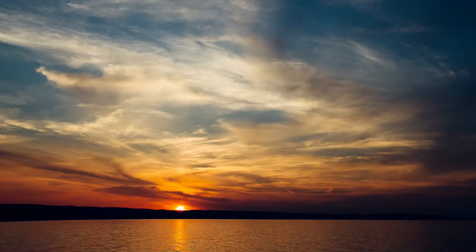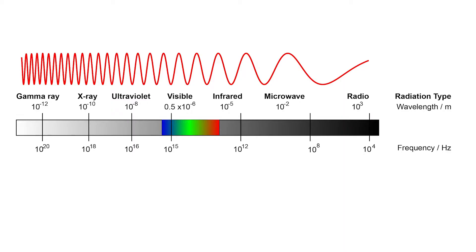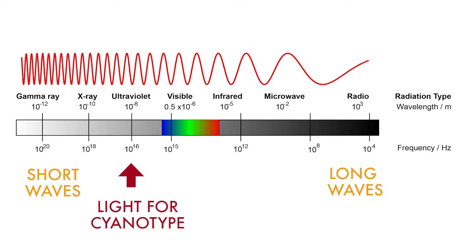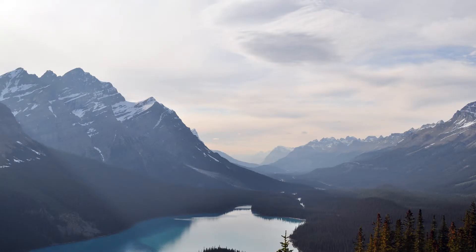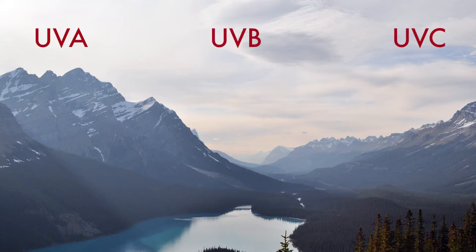Our sun produces energy across the full electromagnetic spectrum, from very long radio waves to very short gamma waves. But the wavelengths of light that we use to expose the cyanotype images are in the ultraviolet range. Ultraviolet light can be divided into different groups called UVA, UVB, and UVC. UVC rays are almost completely absorbed by Earth's atmosphere, which is good, because they're harmful to living things. In fact, we use UVC light to destroy bacteria and fungus.